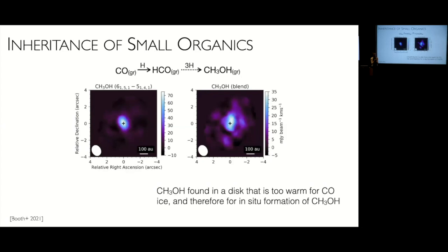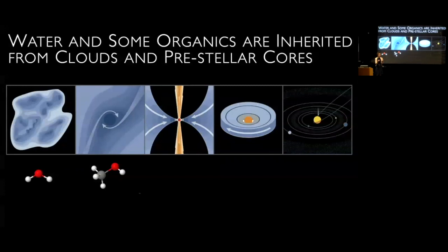Transitioning from the cloud phase to the pre-stellar core, we see things like methanol forming in the ice, and we think a lot of that survives. A recent beautiful paper by Alice Booth shows detection of methanol in a protoplanetary disk that is too warm for methanol to have formed there — CO ice sublimates around 20–25 K, and no region in that disk is cold enough. The only explanation is that the methanol was inherited and then sublimated into the gas phase. So both simple organics and other small volatiles form early on and survive into the disks where planets are forming.